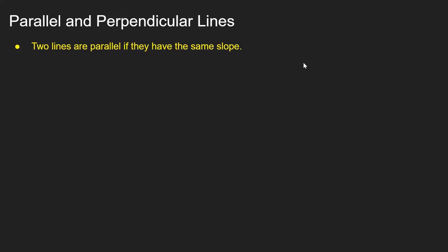As you probably know, two lines are parallel if they have the same slope, and two non-vertical lines are perpendicular if their slopes are opposite reciprocals of one another.